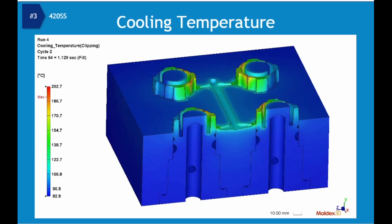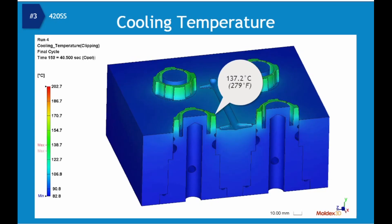Here you can see the outer core features have a higher temperature. The maximum temperature of 137.2 degrees Celsius is in the core feature on the gate side of the mold. Due to the center baffle circuit, the center core has an acceptable temperature distribution.